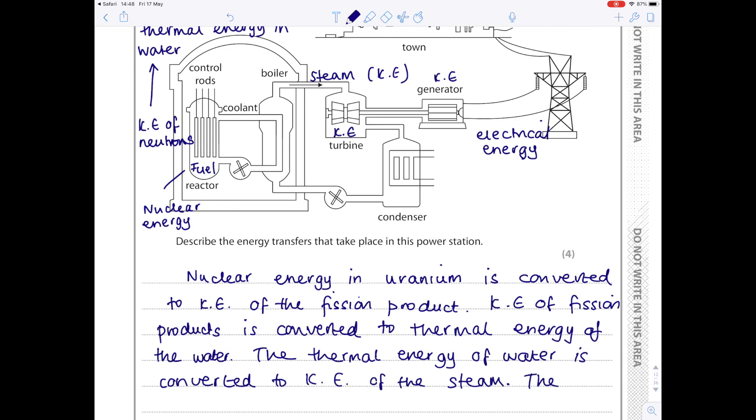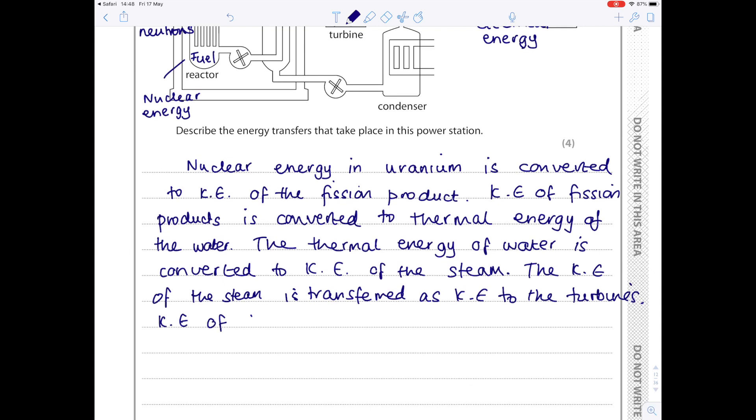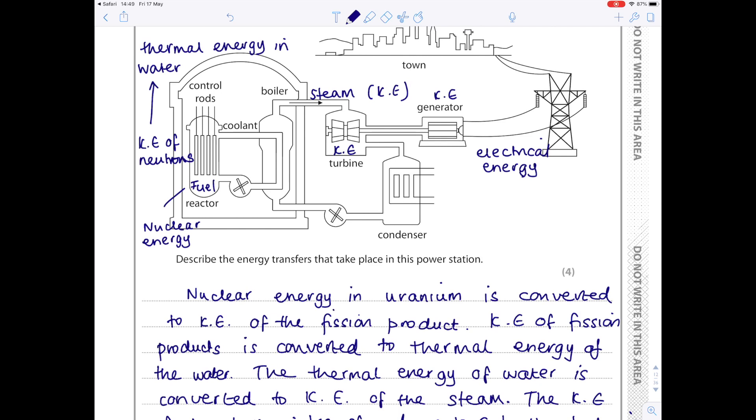The thermal energy of the water is converted to kinetic energy of the steam. Such a boring question. The kinetic energy of the steam is transferred as kinetic energy to the turbines, and then lastly, kinetic energy of turbines is transferred to electrical energy of the generator. So effectively we've linked together all parts of this power station and talked about what type of energy transfers have taken place.